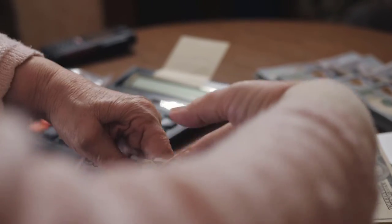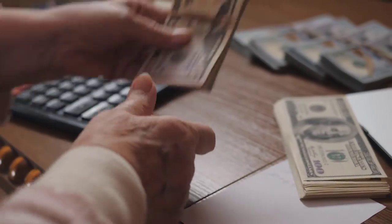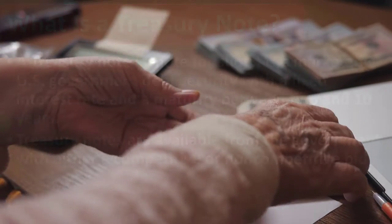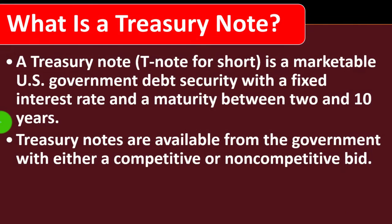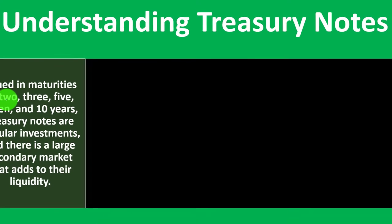It has a maturity between 2 and 10 years. Treasury Notes are available from the government with either a competitive or non-competitive bid. With a competitive bid, investors specify the yield they want, at the risk that their bid may not be approved. With a non-competitive bid, investors accept whatever yield is determined at auction.